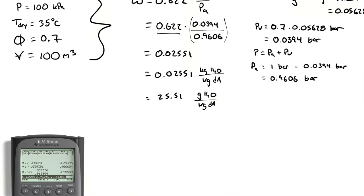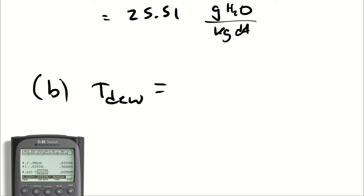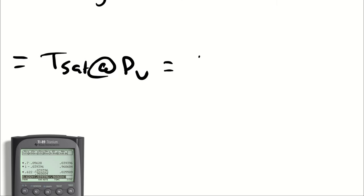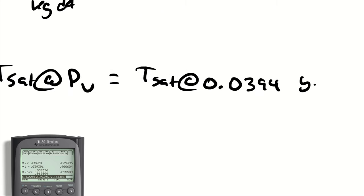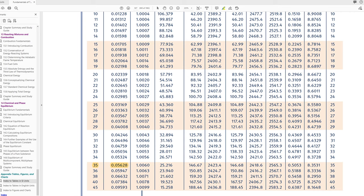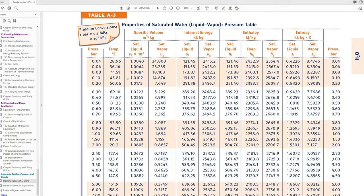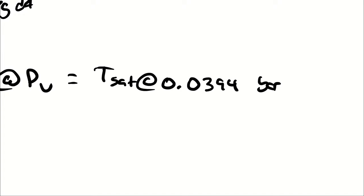Part B asks for the dew point. The dew point is going to be Tsat at Pv. So we need to take 0.0394 bar and look up a saturation temperature. I'll go back to my tables and mosey over to table A3. At the top of table A3, I can see that the lowest pressure on this table is 0.04 bar, and our pressure is 0.0394 bar. So it would probably be fine to answer with about 28.96 degrees Celsius.